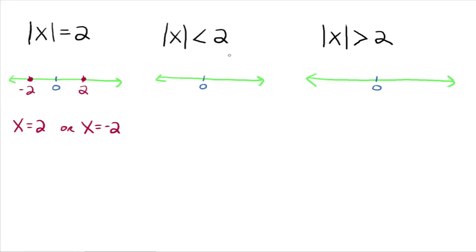So now let's move over to the inequality. Now what we're looking for are all numbers whose distance from zero is less than 2. Here's 2 and here's negative 2. Do 2 and negative 2 have a distance that's less than 2 units from zero? No. But all numbers in between negative 2 and 2 — if you take any one of those numbers — will make this a true statement because they all have a distance from zero that's less than 2 units. There are an infinite number of them, so we shade. 2 is a parenthesis, negative 2 is a parenthesis, because those are not included. So this is what the graphical representation would look like.